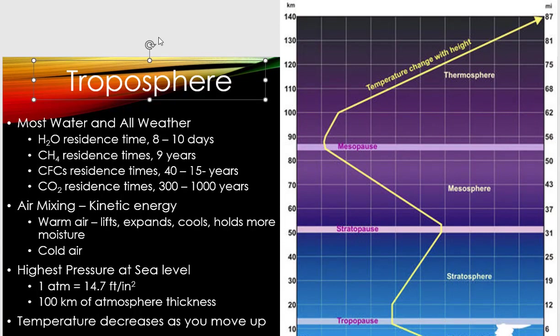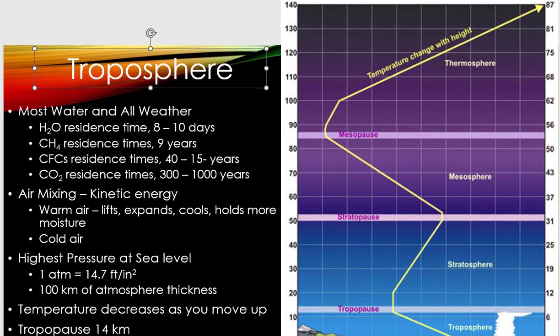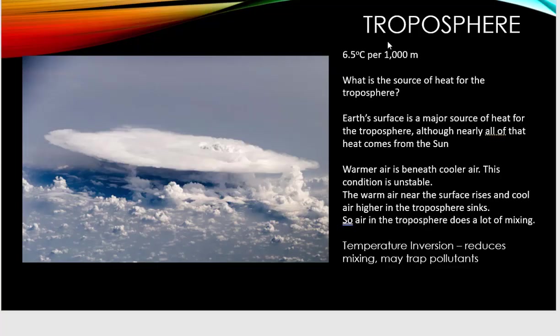A little bit about the troposphere: there is the tropopause, which is the boundary between the troposphere and the stratosphere. There's a change in temperature of around 6.5 degrees per thousand meters as you go higher up. The source of heat in the troposphere is really the heat bouncing off Earth's surface — Earth's surface is a major source of heat, and it's mostly that infrared (IR) radiation, which is the longer wavelength.